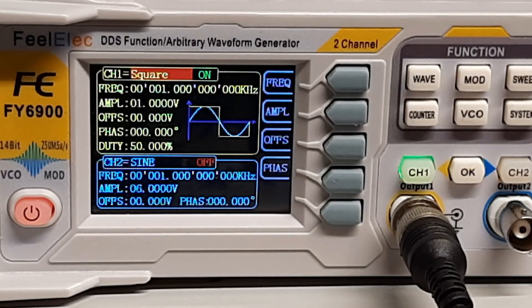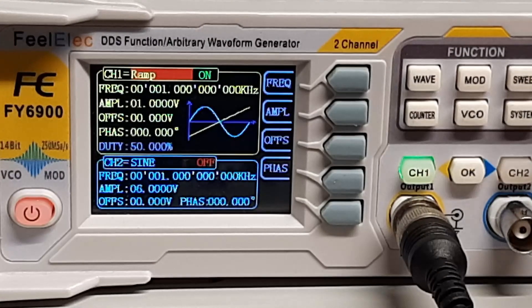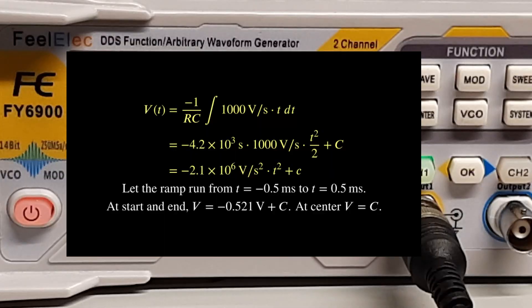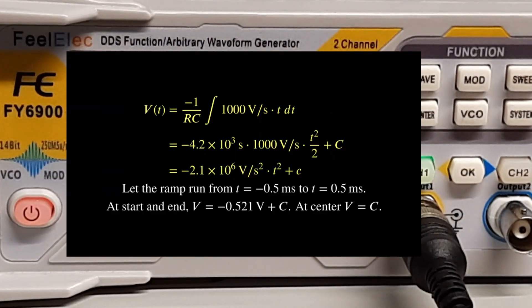How about putting a sawtooth in? The math tells me that the output should be a series of parabolas, concave downward, and a little bit over a half volt peak to peak. Looks about right.